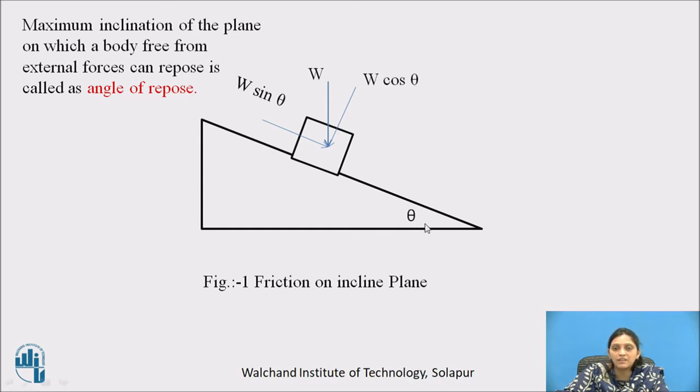As the plane makes theta with horizontal, its perpendicular will make theta with vertical. So W cos theta is perpendicular to the plane and W is vertical. W and W cos theta bear an angle theta between them. The force component perpendicular to the plane is W cos theta, and the force component parallel to the plane is W sin theta.